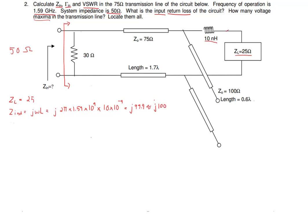Adding Z_L and Z_inductor together, let's call that Z2 — so Z2 equals Z_L plus Z_inductor. Now we can add the next component, which is a stub connected in parallel, so that's going to be a shunt. We can see that this stub is open, so we'll call that Z_SSL, and the formula for an open stub is negative j*Z0*cot(beta*L).